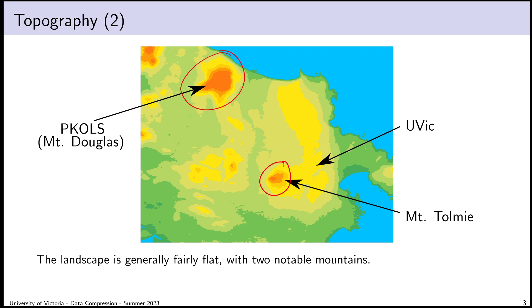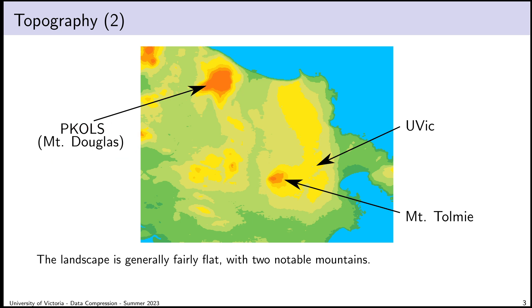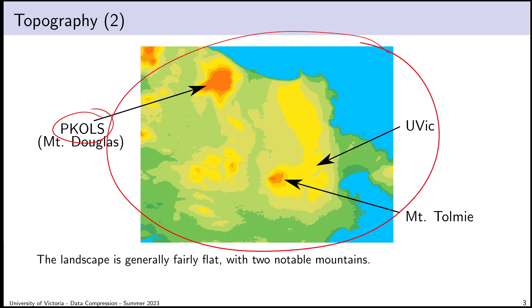Up in the other corner of our dataset we have a mountain that, growing up in Victoria, I would call Mount Douglas. But as of 2022, its original name of Picalls has been officially restored. Please forgive me if I accidentally call it Mount Douglas again — I'm still getting used to the name change. Many of you attending UVic may actually live inside this neighborhood, and both of those points will be relevant later.